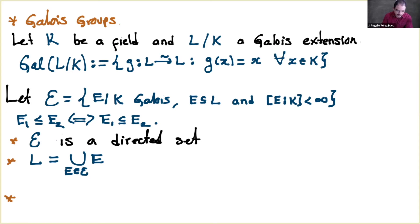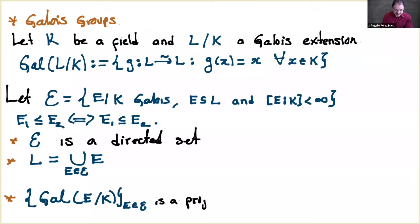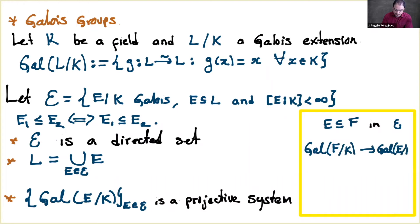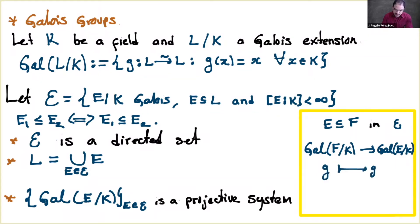We can consider the family of Galois groups Gal(E/K) for E in this family of finite intermediate Galois extensions. One can verify this is a projective system. The morphisms for the projective system are the restriction maps: whenever E_1 ⊆ E_2, we have a morphism from Gal(E_2/K) to Gal(E_1/K) given by restriction.